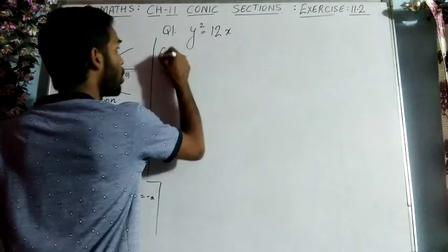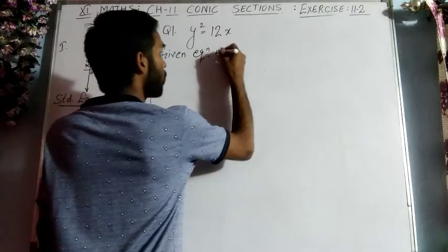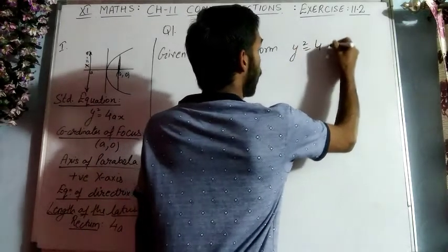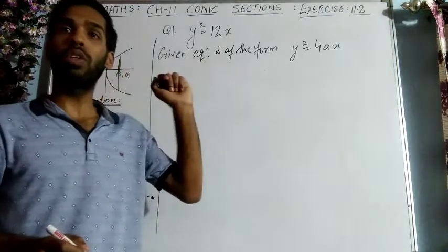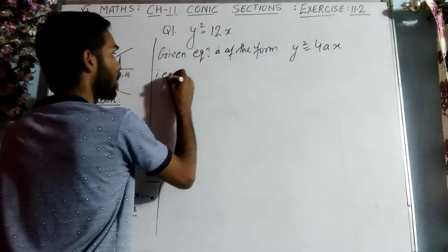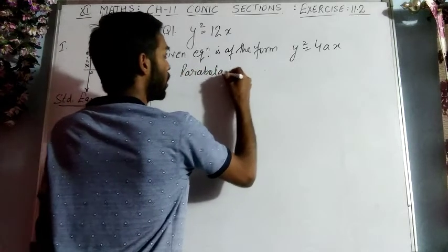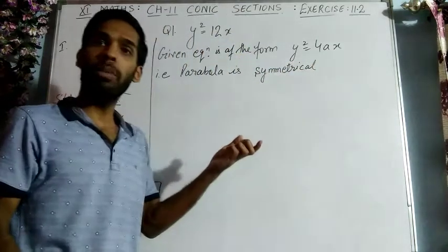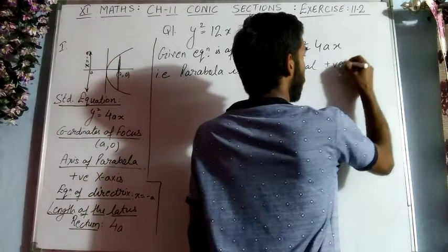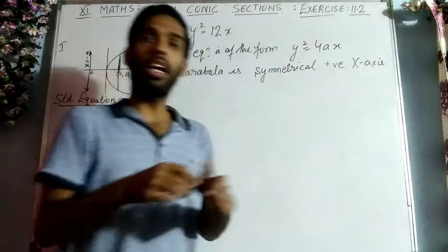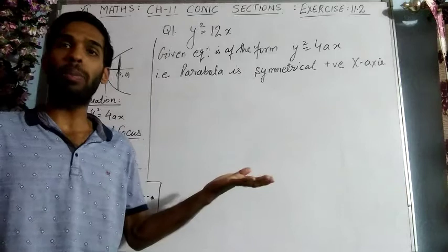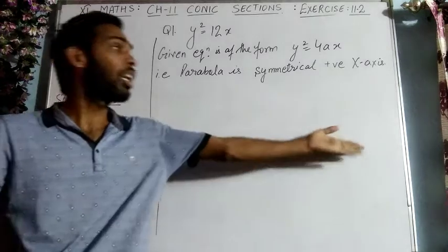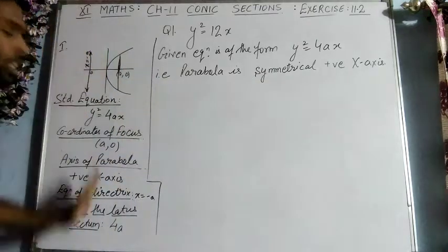For Q1: y² = 12x. The given equation is of the form y² = 4ax, so this parabola is symmetrical about the positive x-axis. Before finding the properties, compare the given equation with the standard form. Comparing y² = 12x with y² = 4ax, we get 4a = 12, therefore a = 12/4 = 3. So the value of a is 3.